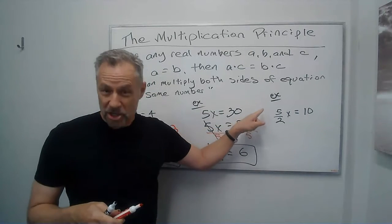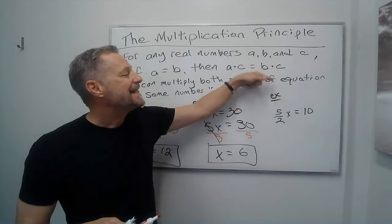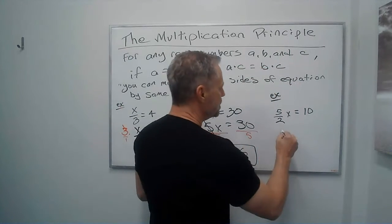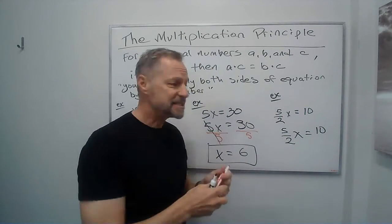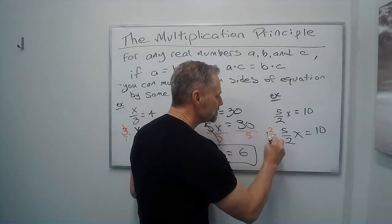All right. This time we can do this in two steps. We can multiply by 2 on both sides, then divide both sides by 5. I'm going to do it in one step by multiplying by the reciprocal. Well, the reciprocal of 5 halves is 2 fifths.